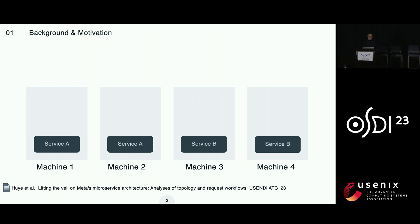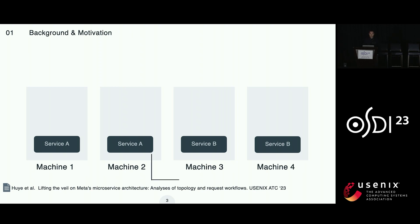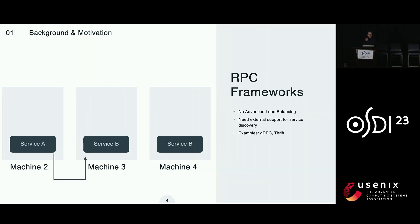At Meta, most applications are architected using the microservice paradigm, and there was a very nice paper yesterday at ATC characterizing a lot of the microservices. Every application is decomposed into microservices, which are commonly replicated, and service instances are deployed on containers on physical machines. This process is managed by Meta's cluster management system called Twine. How these services communicate is typically achieved through RPC frameworks, and at Meta we use the Thrift RPC framework.